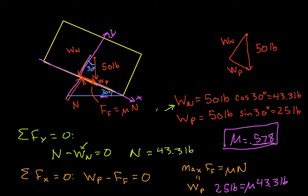On the other hand, if mu is less than 0.578, so if mu is say 0.3, then the maximum F sub F would be about 13 pounds. And since W P is 25 pounds, the block would start to move. So as long as the actual coefficient of friction is greater than 0.578, friction will oppose this W P causing the block to slide. If it's less, it won't.